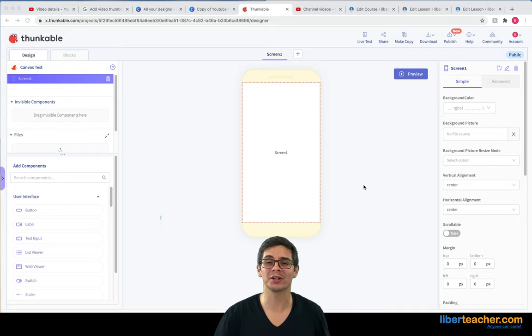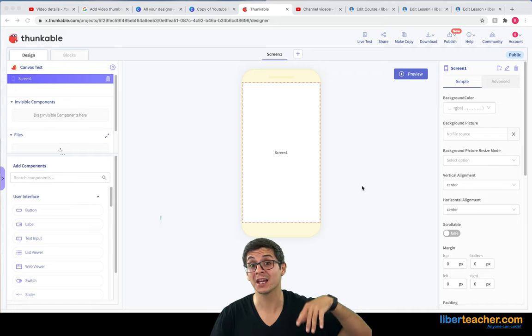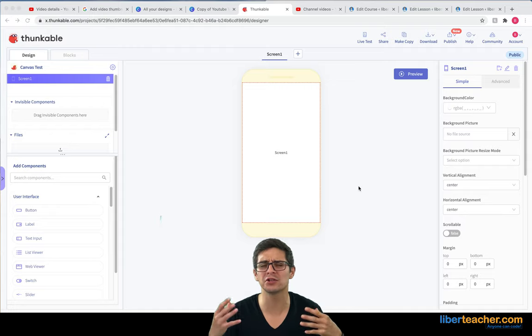Hi everybody. In this lesson, we're going to go ahead and throw a canvas component in, and we're going to throw in some labels, and we're going to try to figure out where the x and y axis are in the canvas component. So let's go ahead and get started.